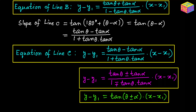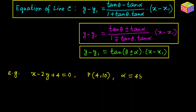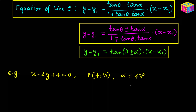Next, let's take an example. Suppose we are given the equation of a straight line: x − 2y + 4 = 0, a point P with coordinates (4, 10), and we have to determine the equations of two straight lines inclined at 45° with the given line. We have all three required pieces of information.